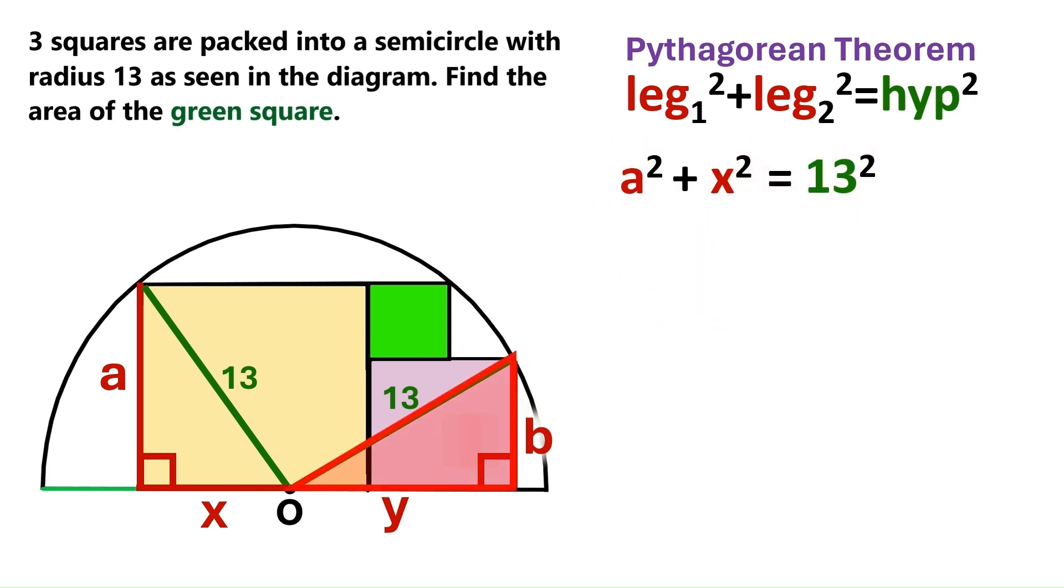Now let's look at the triangle on the right. The legs are y and b, so we take their squares. And the hypotenuse is 13, so we also take the square of that. And here is the second equation.